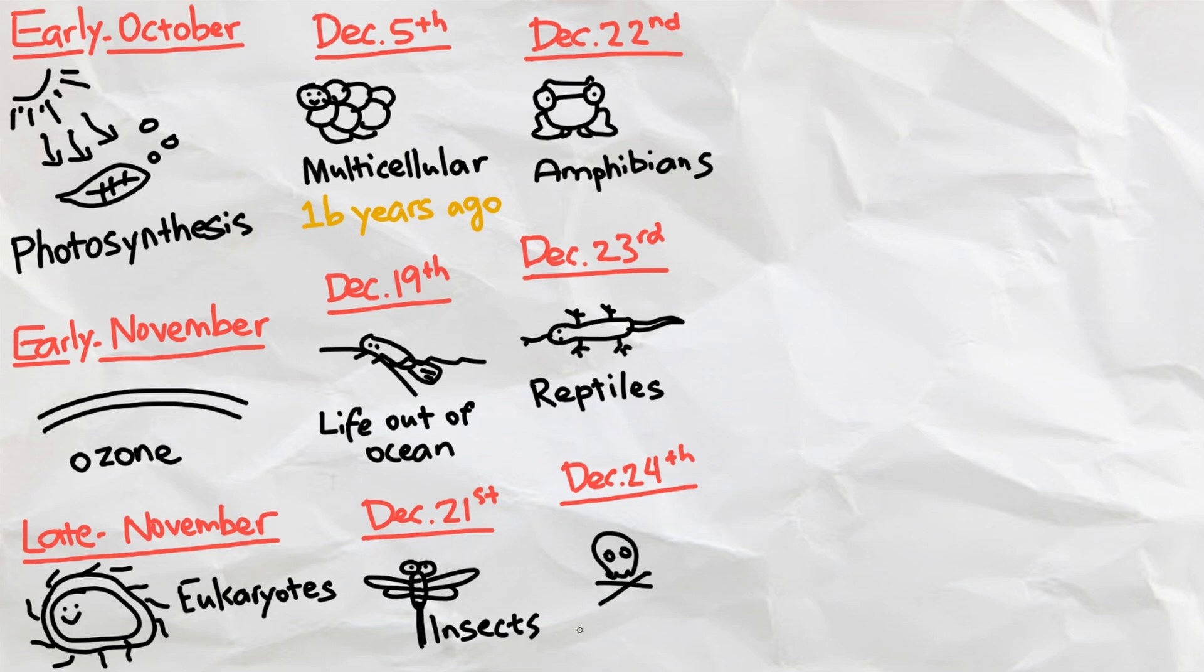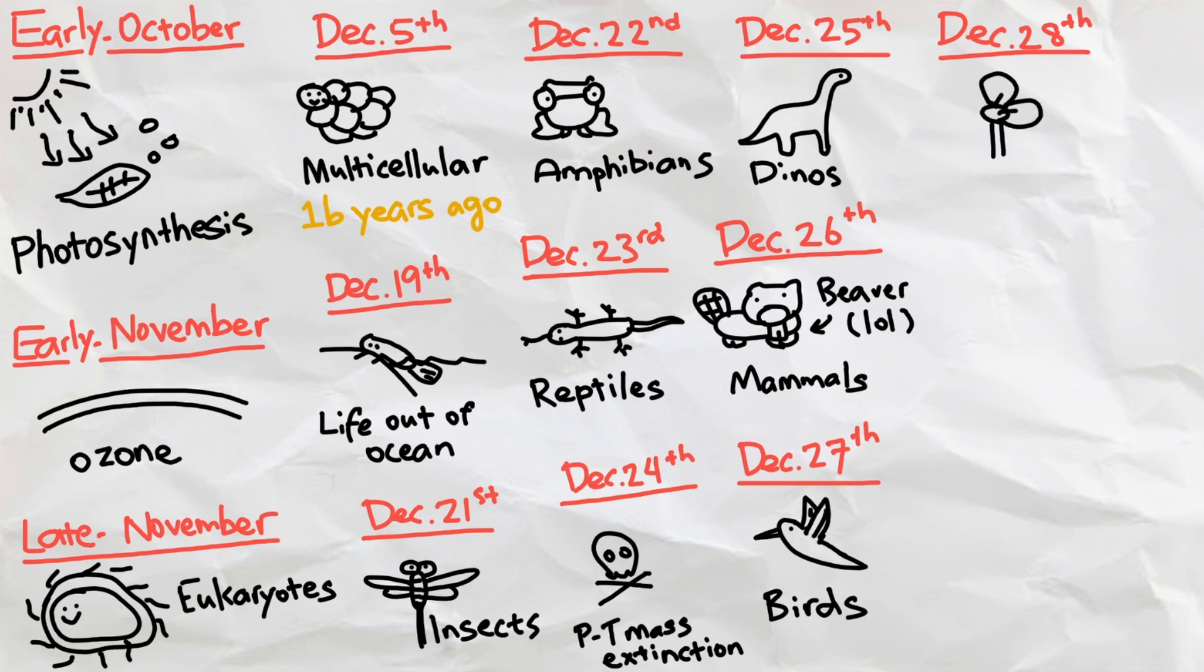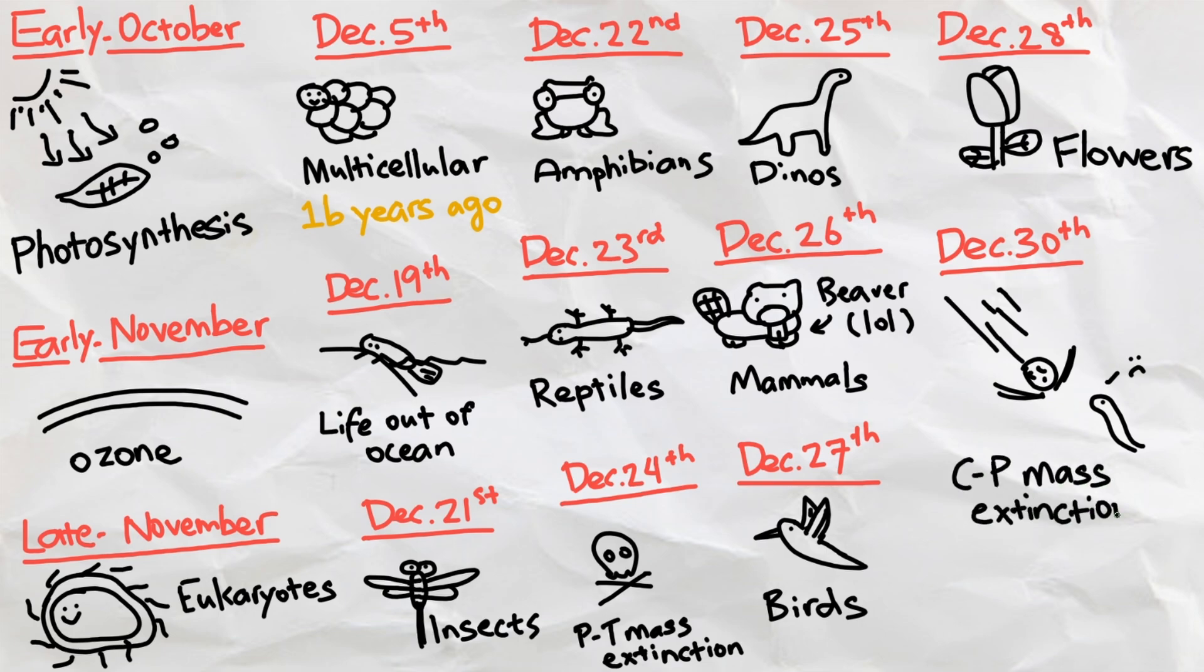Following the Permian-Triassic mass extinction on the 24th, dinosaurs started to dominate Earth on the 25th. The first mammals started to emerge on the 26th, birds on the 27th, and following flowers on the 28th, most of the dinosaurs became extinct on the 30th from the Cretaceous-Paleogene mass extinction.